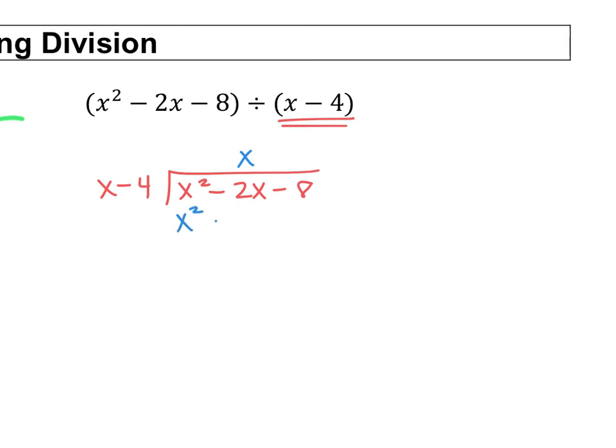x times a negative 4 is a negative 4x, and then we subtract. x squared minus x squared cancels, and here's where we have to be careful. Negative 2x, if I were to write this over here, this is what it's saying to do: negative 2x minus a negative 4x. That will turn to plus and end up with a positive 2x.